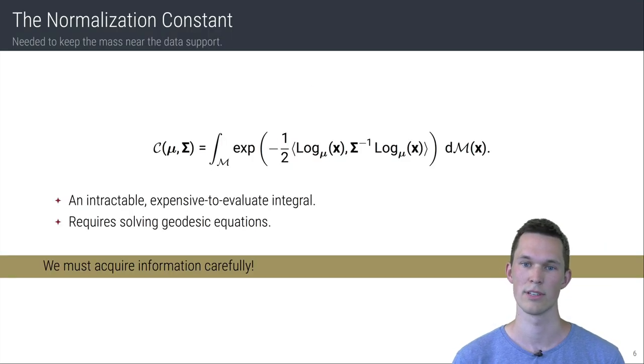The normalization constant of this distribution is needed to keep the mass near the data support. It is, however, an intractable integral as evaluations require solving a system of ordinary differential equations called the geodesic equations. Thus, we must acquire information carefully, which renders a naive Monte Carlo approach prohibitive.